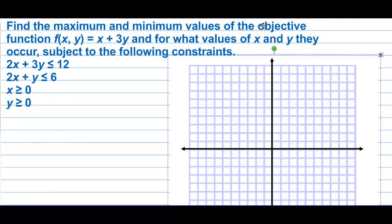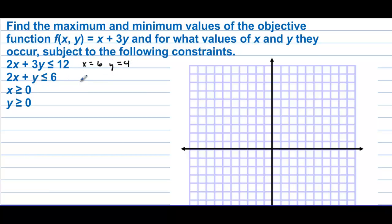Find the maximum and minimum values of the objective function and for what values of x and y they occur, subject to the following constraints. Let's get the intercepts. The x-intercept on the first equation is 6 and the y-intercept is 4. On the second one, the x-intercept is 3 and y-intercept is 6.